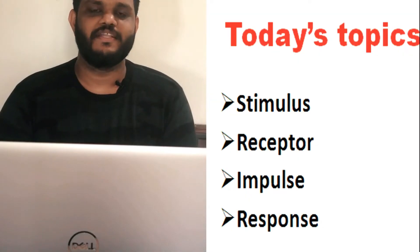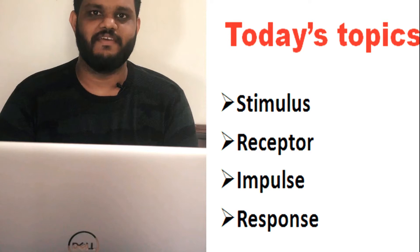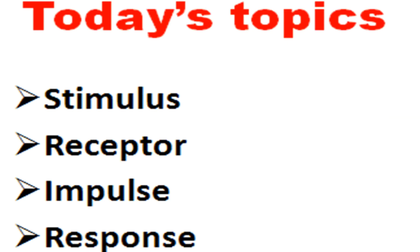How many sense organs do we have? Yes, we have five different sense organs. Have you ever thought about how these sense organs work? Today we are going to discuss about the basic concepts behind these mechanisms, that is stimulus, receptor, impulse, and response.